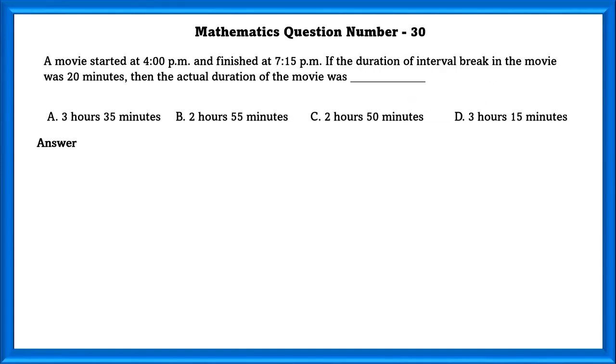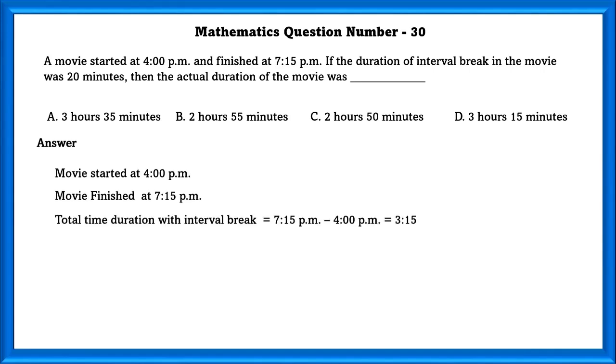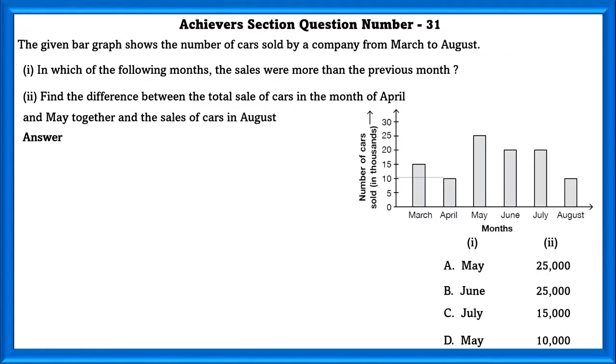Mathematics question number 30. A movie started at 4 p.m. and finished at 7:15 p.m. If the duration of the interval break in the movie was 20 minutes, then the actual duration of the movie was. First, let's find the duration of the movie with the break, which is equal to 3 hours 15 minutes. If we subtract the interval that was 20 minutes from the total duration, we can know the actual duration of the movie, which is equal to 2 hours 55 minutes. Now, we are going to look at Achievers section.